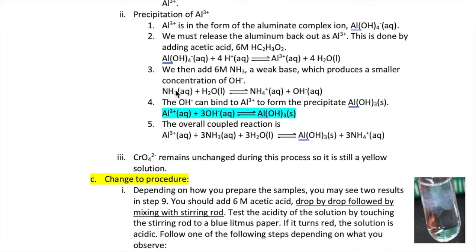Now that aluminum 3 plus are in solution, we can add a small concentration of hydroxide to precipitate it. To do this we use NH3 or ammonia, which is a weak base and therefore only produces a small concentration of hydroxide. The overall coupled reaction between aluminum 3 plus and NH3 is shown here, producing the precipitate aluminum hydroxide and ammonium ion.